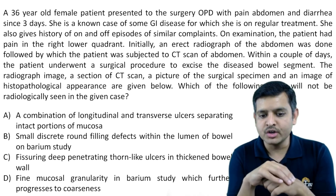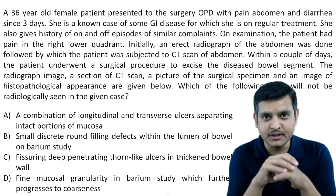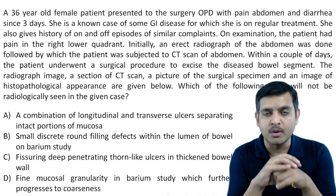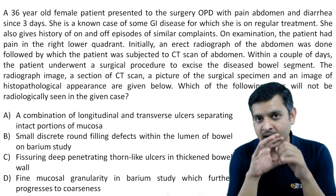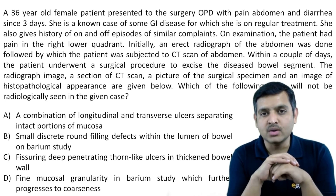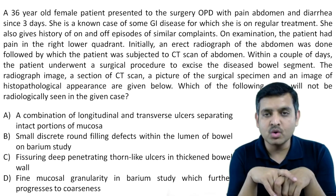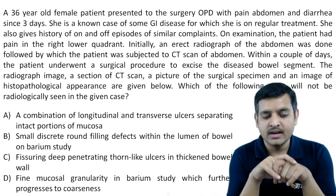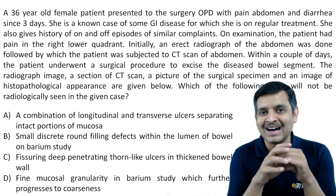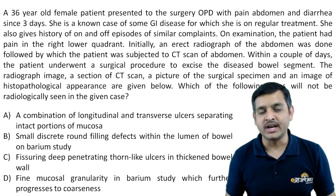A combination of longitudinal and transverse ulcers separating intact portions of mucosa is a feature of Crohn's disease. Small discrete round filling defects within the lumen of the bowel on barium study — again Crohn's disease. Fissuring deep penetrating thorn-like ulcers in the bowel wall — again Crohn's disease. Fine mucosal granularity in the barium study which further progresses to coarseness is a feature of ulcerative colitis, and hence the answer is D.